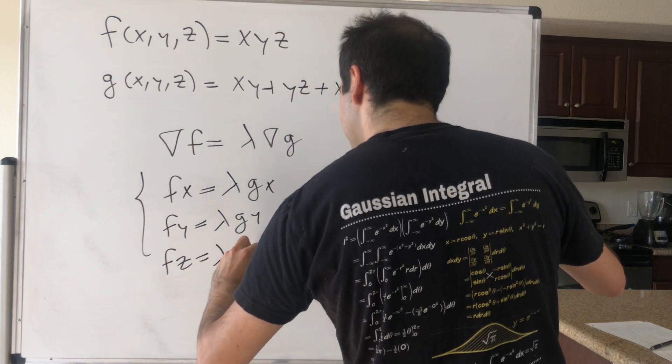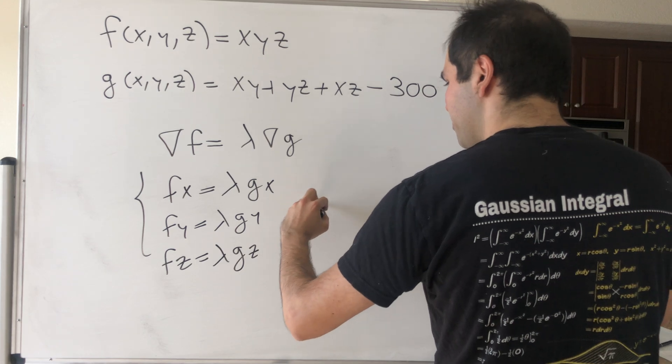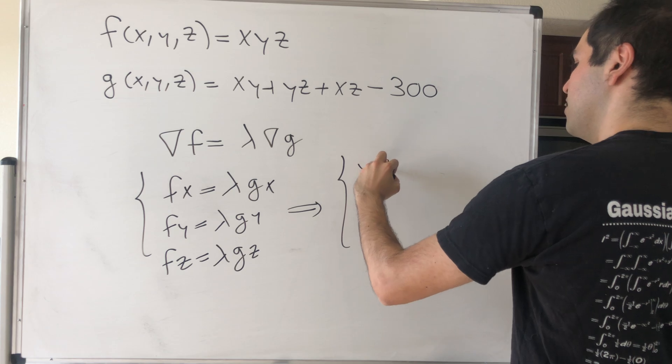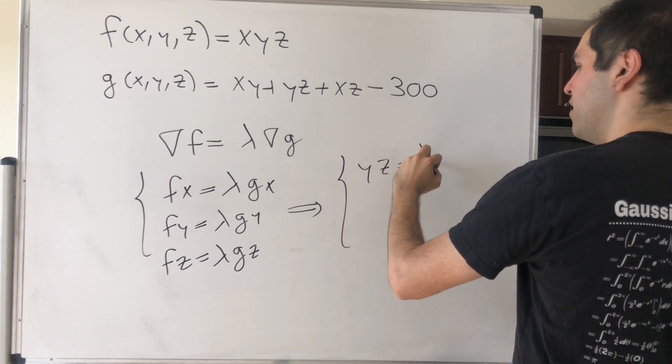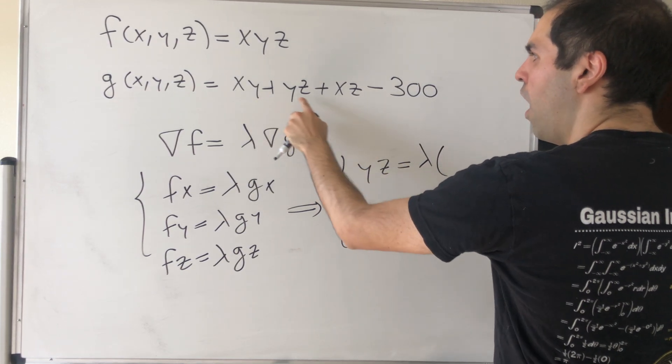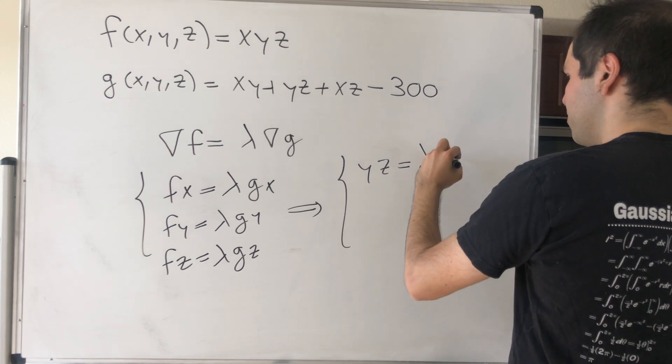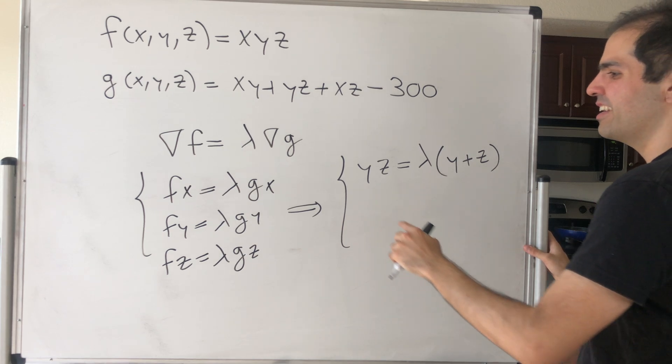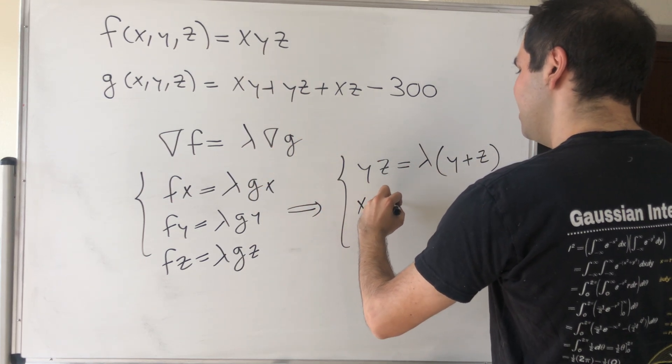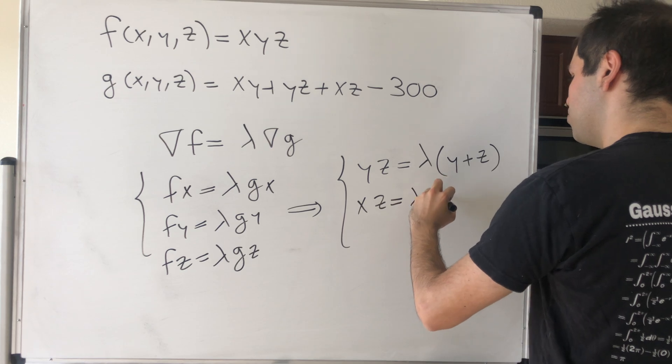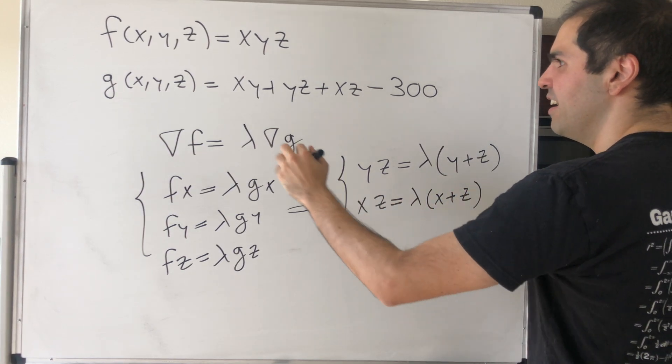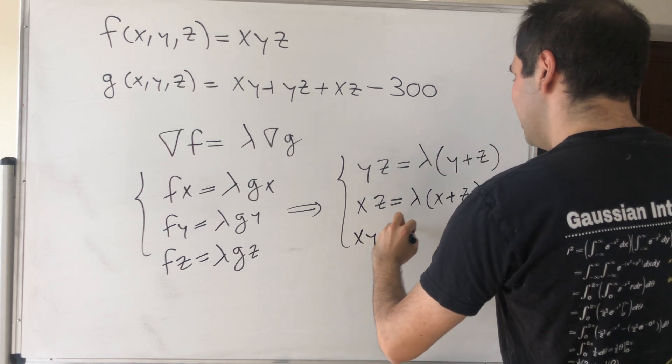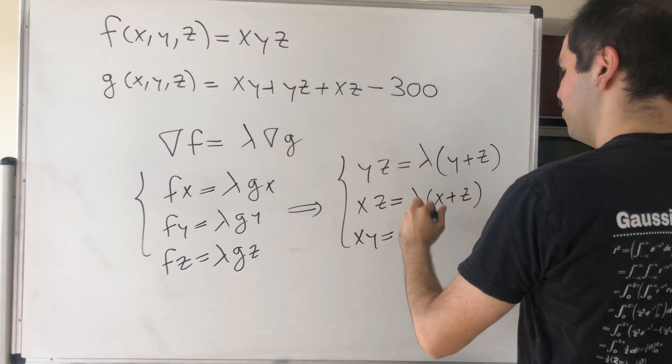Now Fx just becomes yz, so yz equals lambda times (y plus z). It's nice and symmetric. Then Fy would be xz, which equals lambda (x plus z). And finally Fz, which is xy, equals lambda (x plus y).